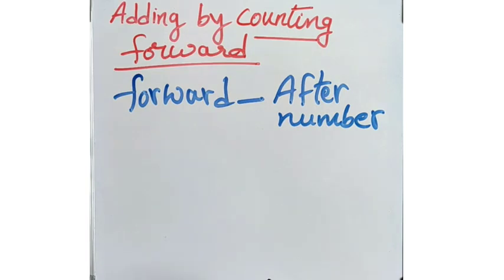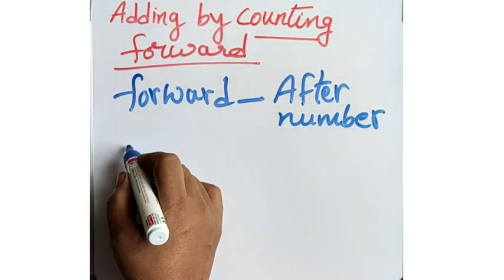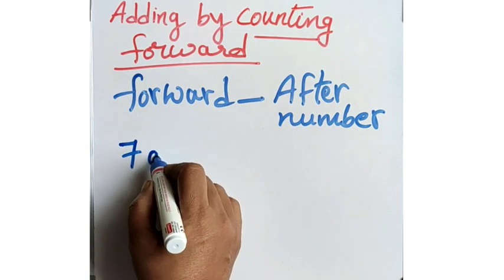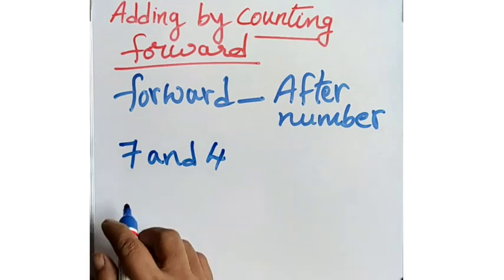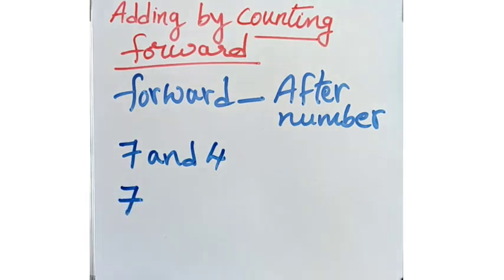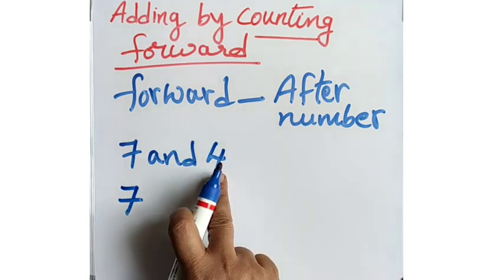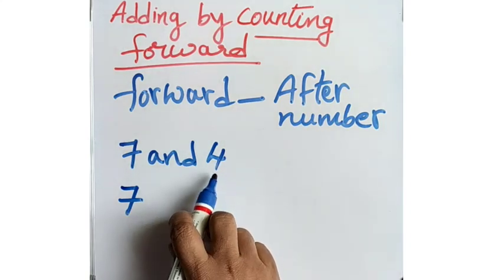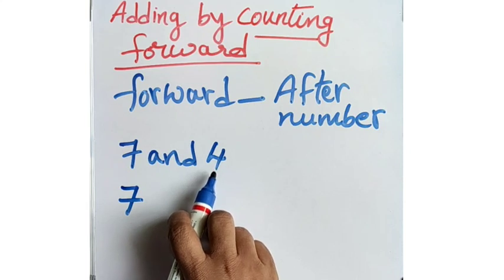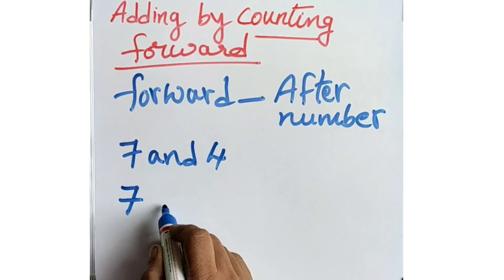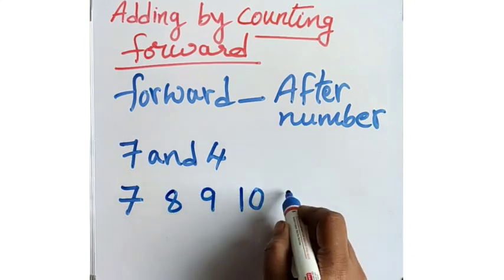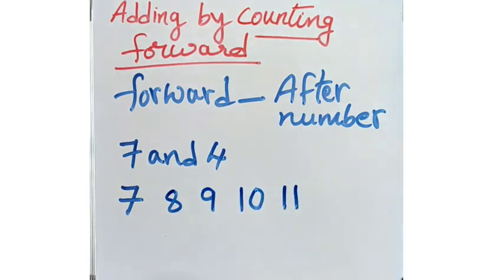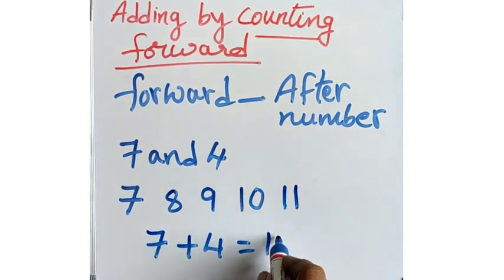Now let us take an example. Let's add 7 and 4. What is the meaning? After 7, you have to count 4 numbers forward. So: 7 after — 8, 9, 10, 11. Is it clear? Then what is the answer we got? 7 plus 4 equal to 11.